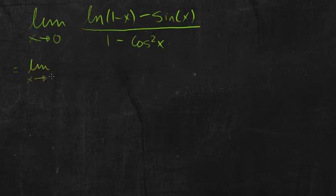Limit as x goes to 0, and I'll write dx over dx of ln of 1 minus x.